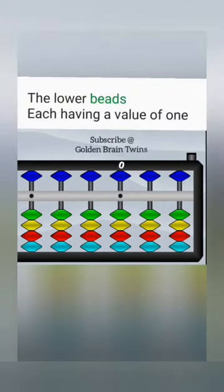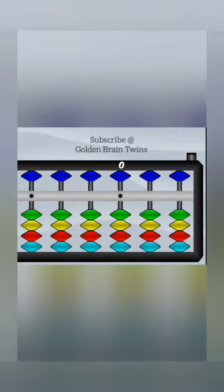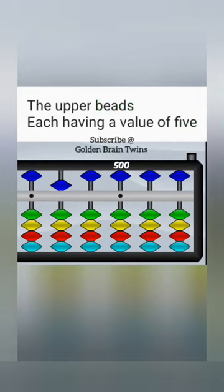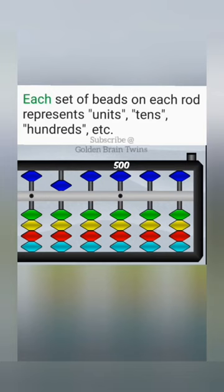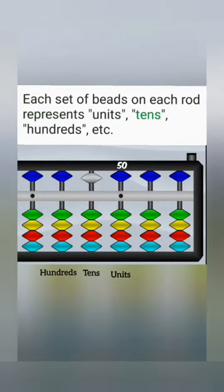The lower beads each have a value of 1, and the upper beads each have a value of 5. Each set of beads on each rod represents different place values: units, tens, and hundreds.